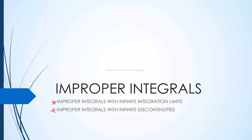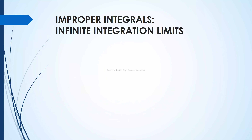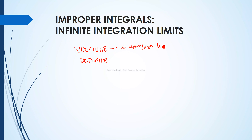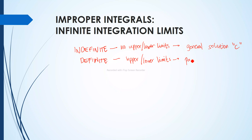So what is an improper integral? Last time we discussed that there are two types of integrals: the indefinite integral and the definite integral. The indefinite integral has no upper and lower limits and you get a general solution with an arbitrary constant c. For a definite integral, it has upper and lower limits and you get a particular solution without the arbitrary constant c.